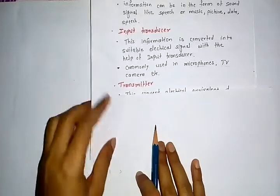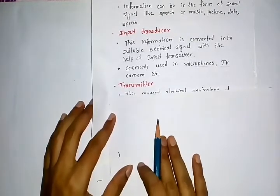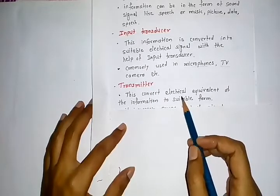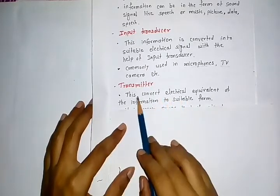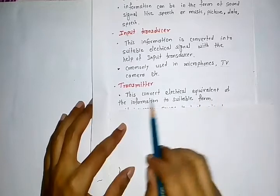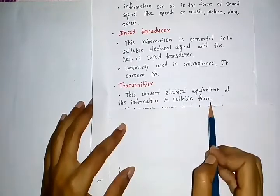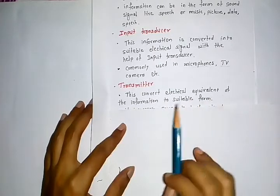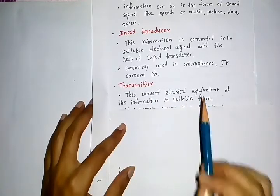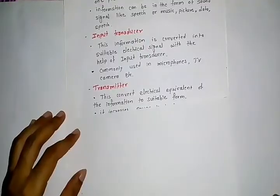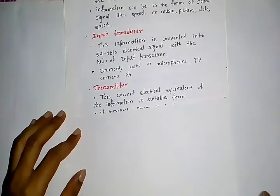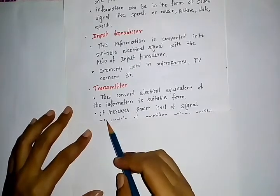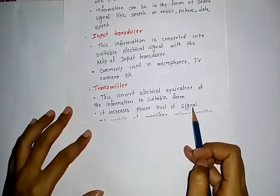The transmitter: its function is to convert the electrical equivalent of information into a suitable form for transmission. A second function of the transmitter is that it increases the power level of the signal.